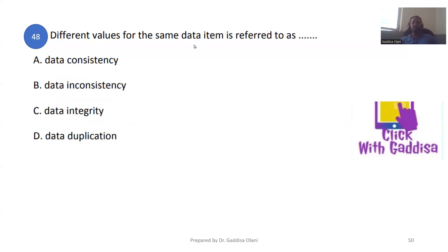Different values for the same data item is referred to as data inconsistency.